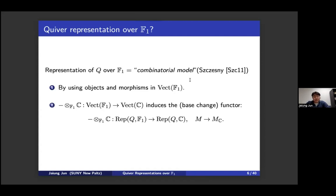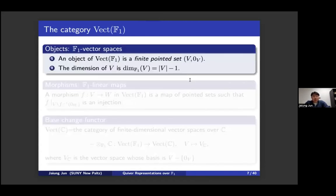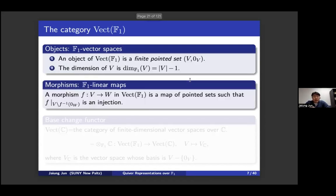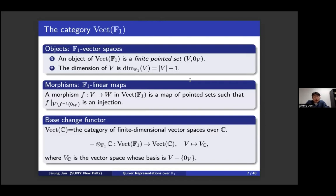The base change functor from F1 vector spaces to complex vector spaces also induces a functor on representations. In the category of F1 vector spaces, objects are finite pointed sets, and the dimension of an F1 vector space is its cardinality minus one — the number of non-zero elements. F1 linear maps are pointed set maps with the extra condition that away from zero the map must be an injection.